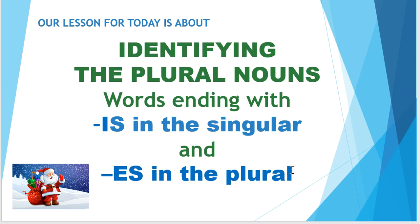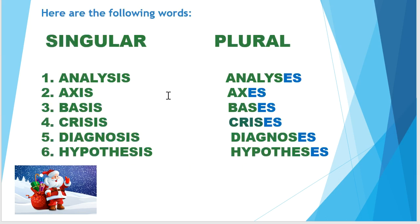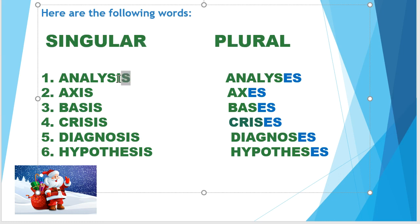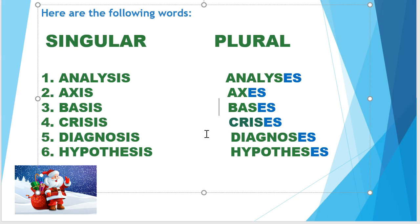Let's move on. Here are the following words in singular and plural. Number one: analysis — plural: analyses. Number two: axis — plural: axes. Number three: basis — plural: bases. Number four: crisis — plural: crises.